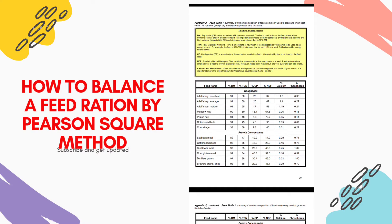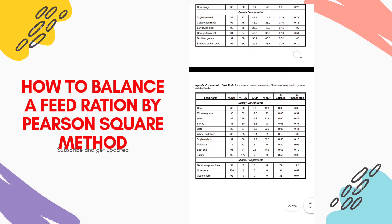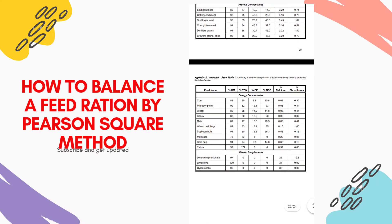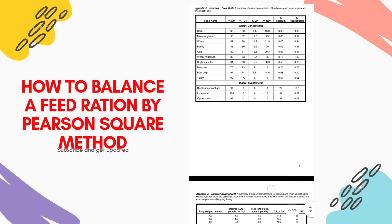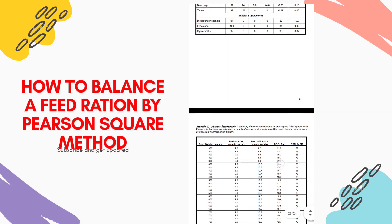It is a very easy and quick way to balance a feed ration. The page shows us Appendix 2, which shows the values of different ingredients we normally use in feed. Appendix 2 continued shows us other types of ingredients we normally use in feed, and then this is Appendix 3.